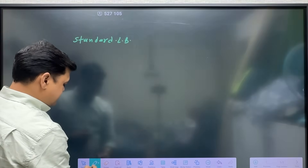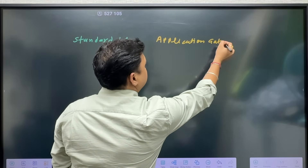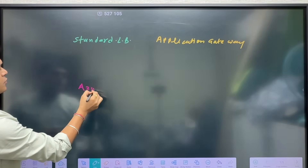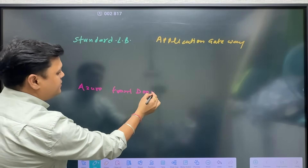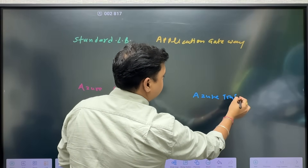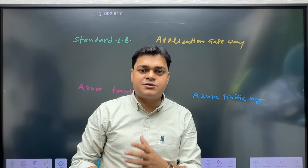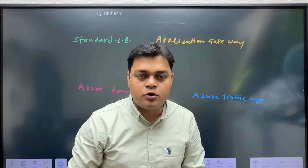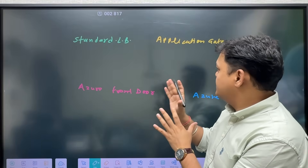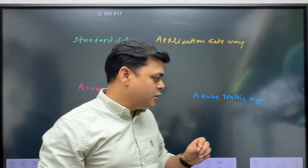On the whiteboard: standard LB, application gateway, Azure Front Door, and Azure Traffic Manager. If anyone asks you a question in a technical interview round — how many methods we have to balance the workload on the Azure portal — you can say we have four different methods: standard load balancer, application gateway, Azure Front Door, and Azure Traffic Manager. Let me tell you about the work of each.